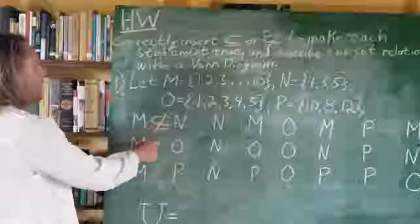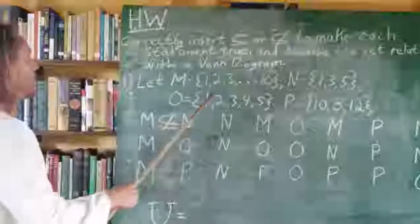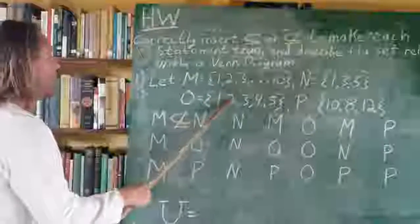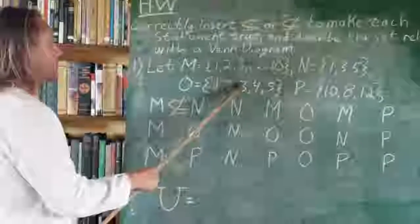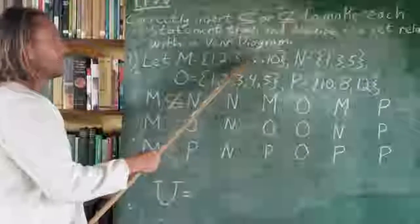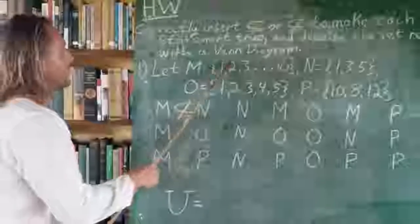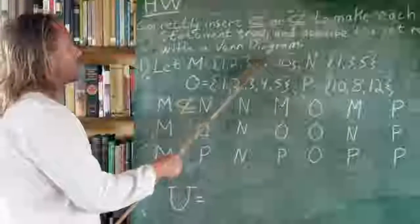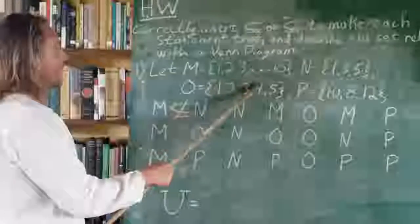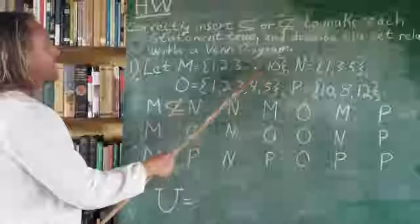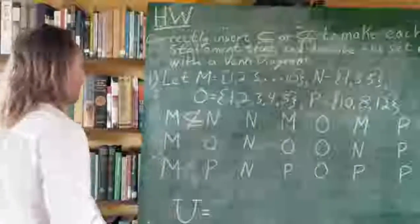How about M with O? M has 1, O has 1. M has 2, O has 2. M has 3, O has 3. Now, the ellipsis means M consists of elements 1, 2, 3, 4, 5, 6, 7, 8, 9, up through 10. So 4 — check, 5 — check. But after that, O stops short, so M is not a subset of O.